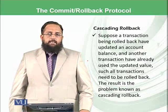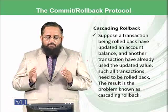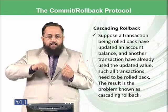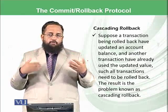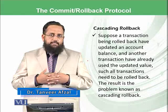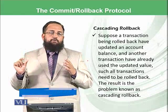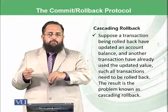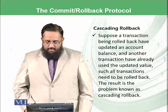There is another phenomenon known as cascading rollback. Suppose a transaction being rolled back has already updated an account, and that account has been used by another instruction — because multiple instructions are being processed across multiple applications using the CPU. This means if Application A has partially executed a transaction and updated an account, and Application B has used that account, then all of those instructions need to be rolled back. That is called cascading rollback.